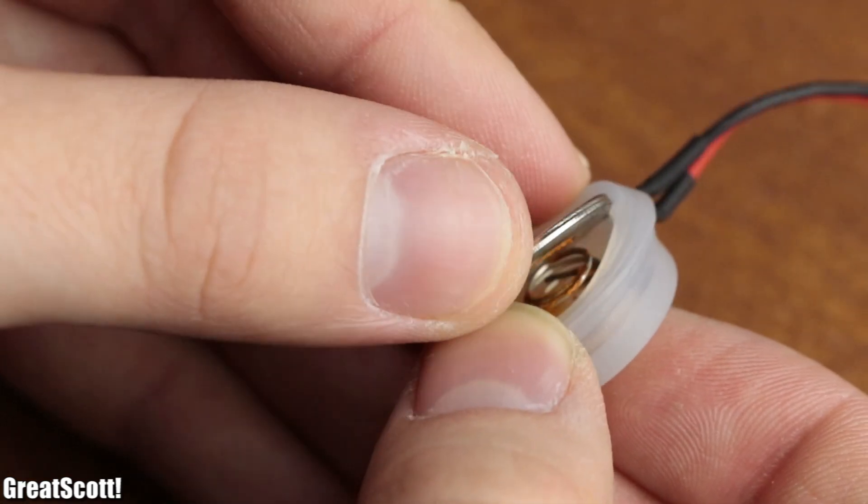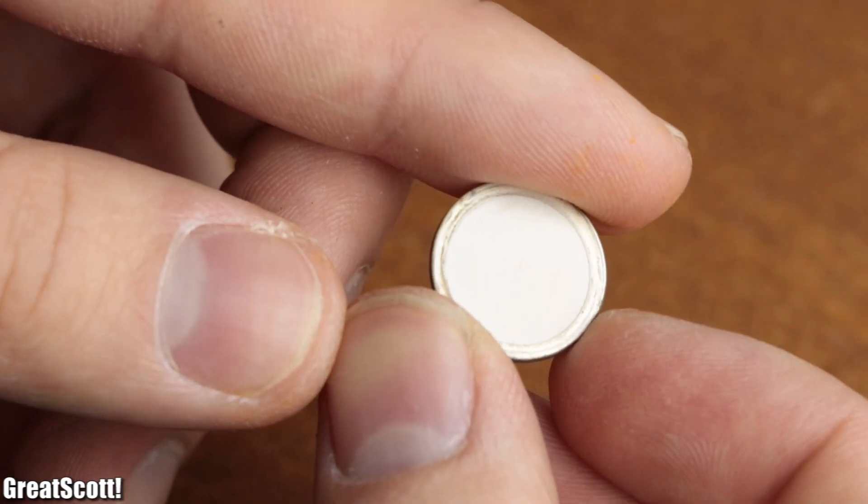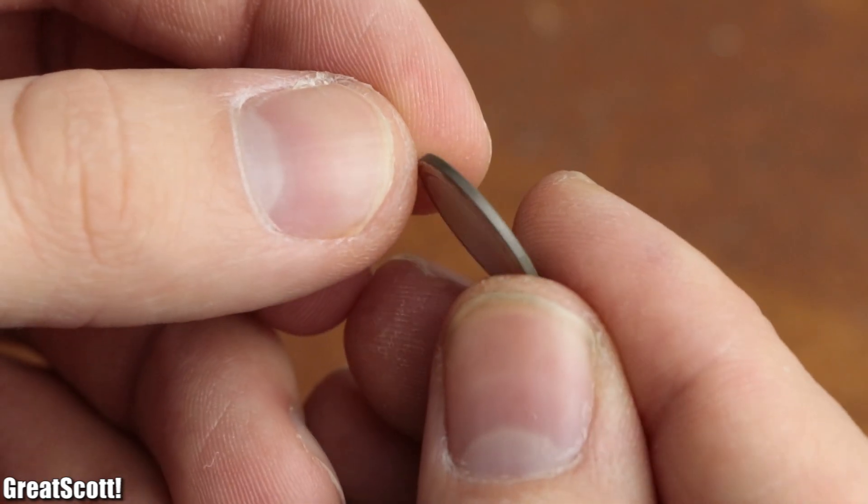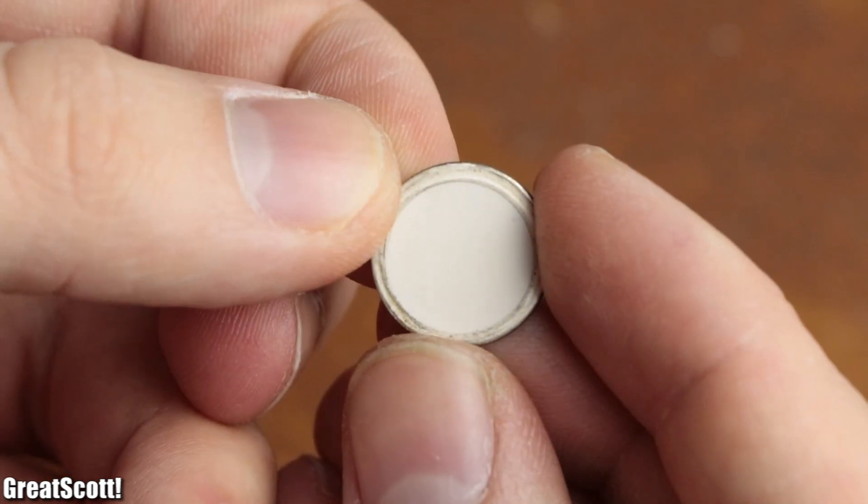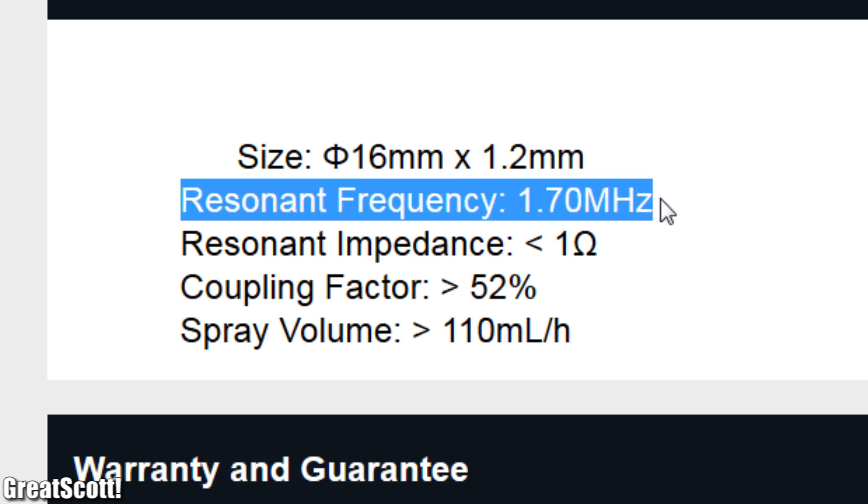First off, let's remove the rubber ceiling and the spring from the piezo disc and have a closer look at it. As you can see, there's really not much to it. Just a plain metal disc, you would say. But its resonance frequency of 1.7 MHz makes it special.